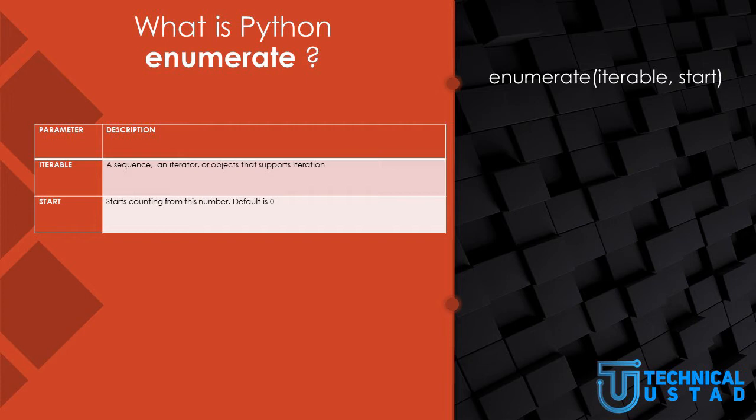The Enumerate function adds a counter as the key of the Enumerate object. The syntax is: we write Enumerate and then between parentheses, the iterable — which is a sequence, an iterator, or an object that supports iteration — and then start, which is the starting index of our counter.